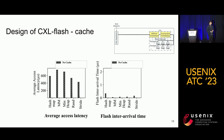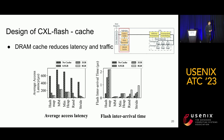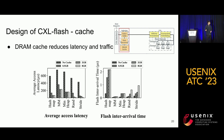To start the design process, let's try to service all host requests directly from the flash memory backend. As you can see, the average access latency is well above 400 microseconds for all workloads, and the inter-arrival time between requests sent to the flash memory backend is very short. To solve this, let's add a DRAM cache so that host requests accessing cached data can be directly serviced from DRAM. As you can see, the average access latency gets significantly reduced, and since many requests are now serviced by the DRAM cache, there is less flash memory traffic.